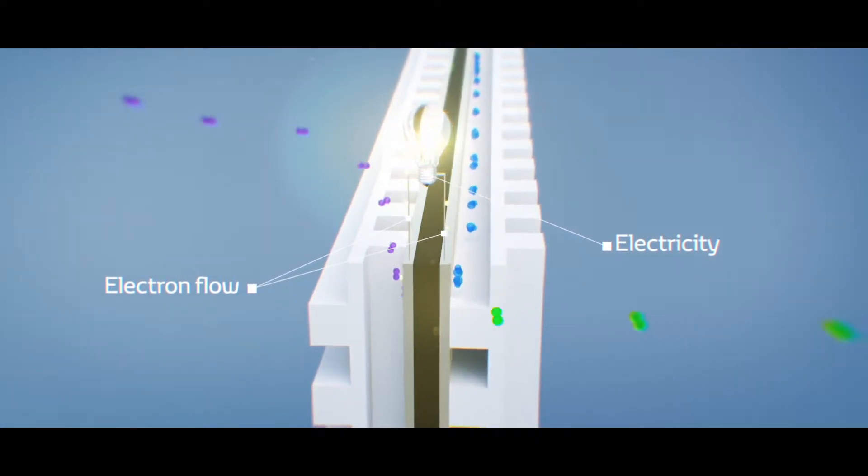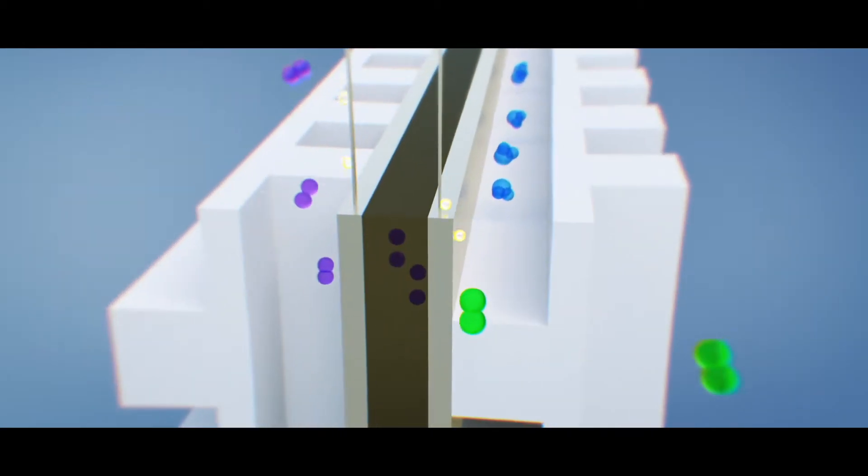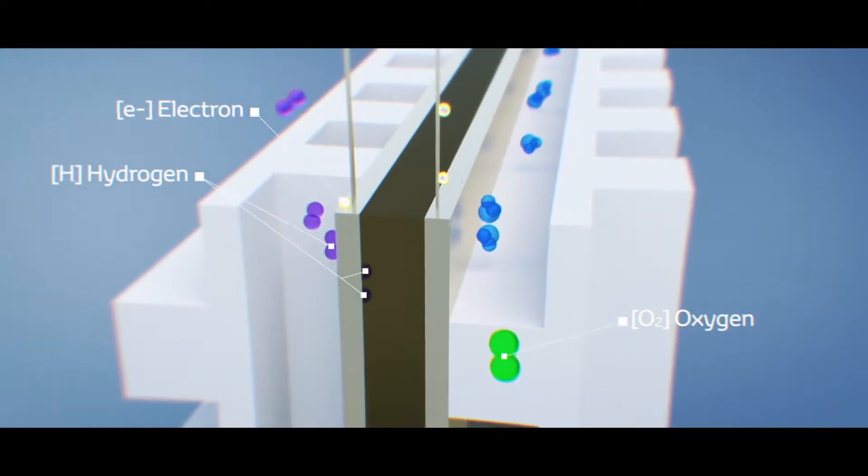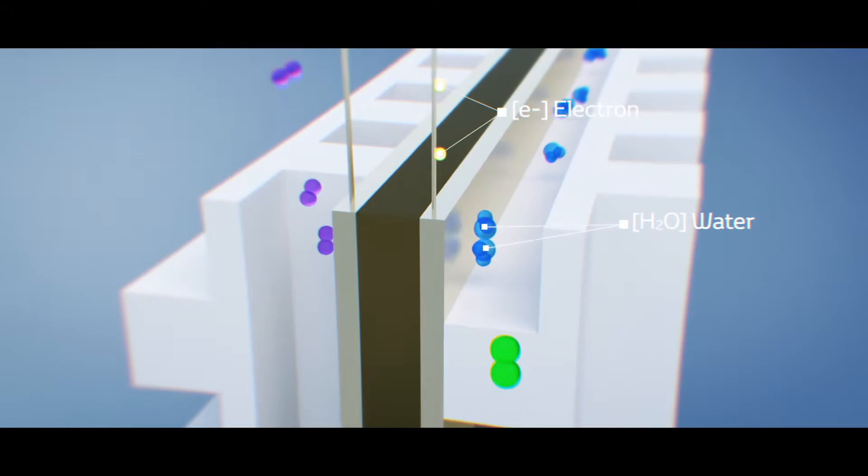After releasing the electron, the hydrogen becomes a hydrogen ion, moving to the positive cathode and bonding with the oxygen in the air, forming water.